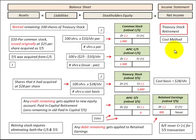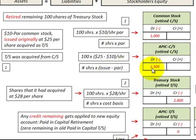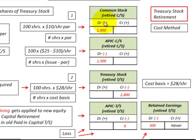When retiring Treasury stock using the cost method, we're retiring the common stock held in the Treasury stock account. We need to determine the original issue price and par value of that common stock. We debit common stock by the number of shares times the par value, and debit additional paid-in capital for common stock by the number of shares times the difference between the issue price and par value. We credit Treasury stock by the number of shares times the cost basis. The balancing amount between the common stock accounts and the Treasury stock account goes to additional paid-in capital for Treasury stock.